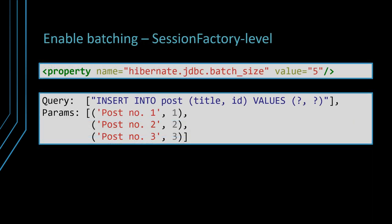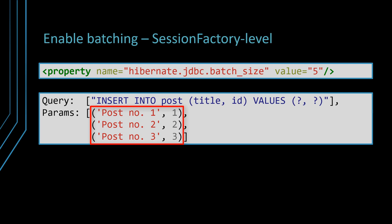Unlike JDBC, Hibernate can switch to batch PreparedStatements with just one configuration property, and no code change is required. If we set the JDBC batch size Hibernate configuration property and re-run the previous test case, we can see that a single SQL insert is being logged, which takes three sets of bind parameter values. This setting is configured at the SessionFactory or EntityManagerFactory level, so all sessions or entity managers created by that factory will use the same JDBC batch size.